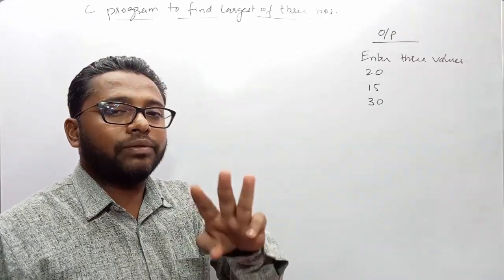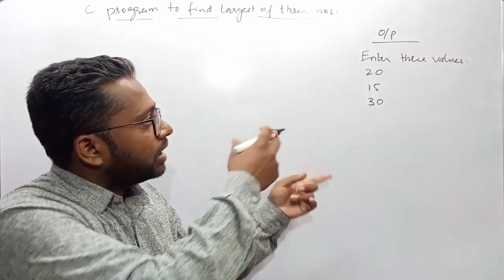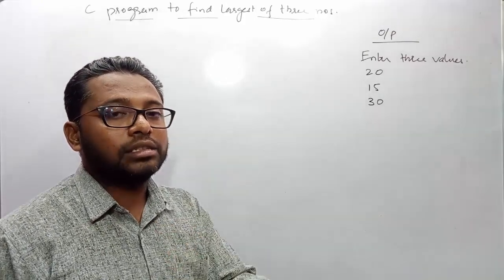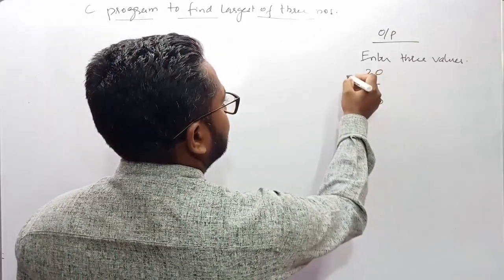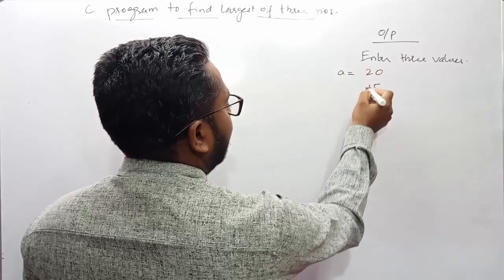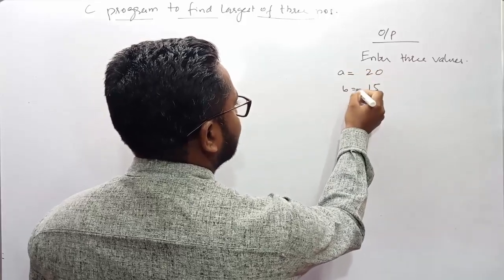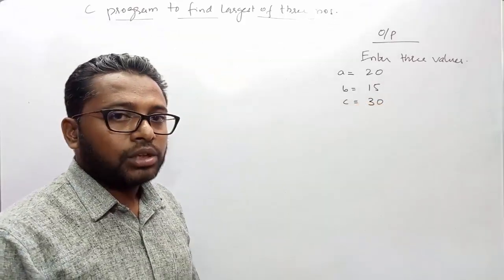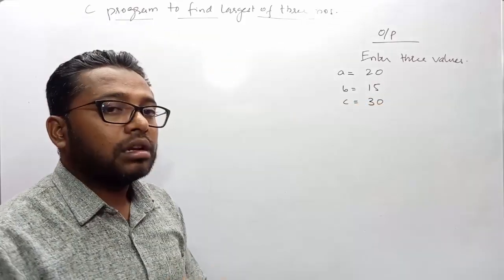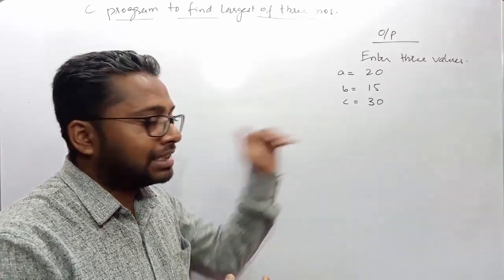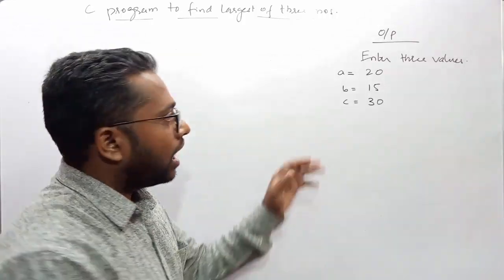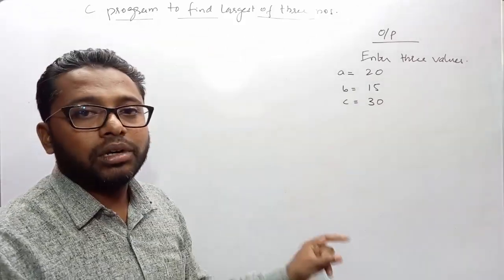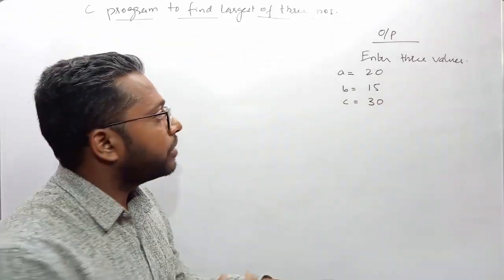Since I'm expecting three different values from the user, I need to create three different variables to store them. I'm expecting integer values, so I'll create three integer variables. The first value gets stored in 'a', the second in 'b', and the third in 'c'. Now I need to determine which is the largest value out of these three.